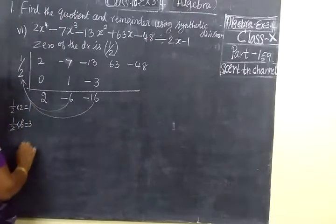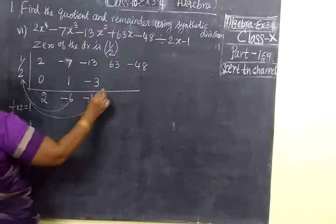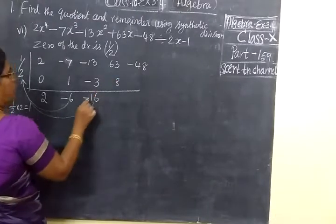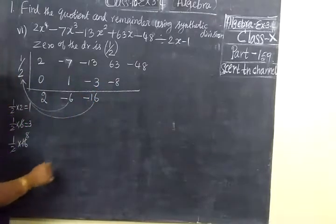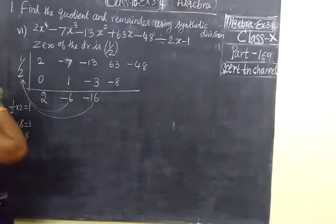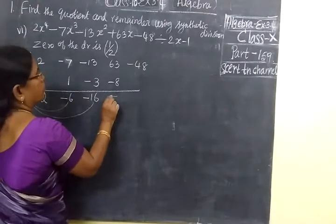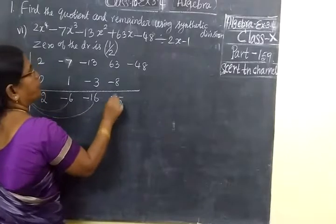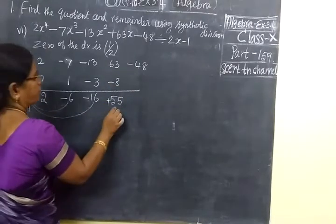Again, you multiply. So write it: 1/2 into 16. Cancel, 8 times. Here you write. So now minus into plus is minus. Now subtract. 63. Then 18. Then 13 minus 8 is 5. Then 5, greater number sign, plus it.